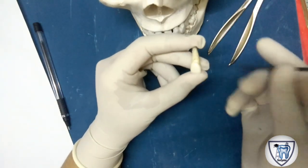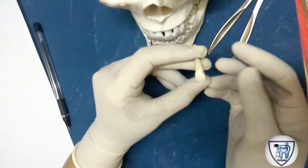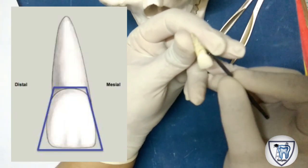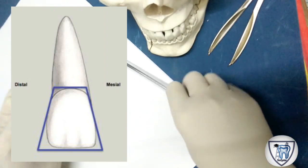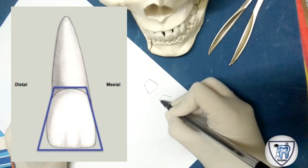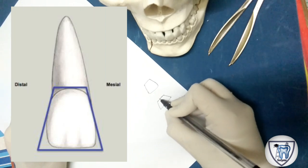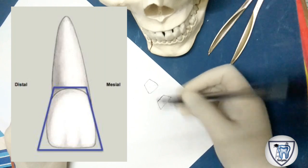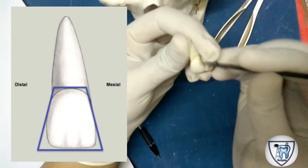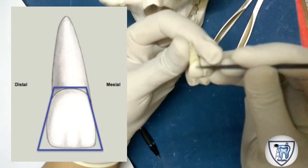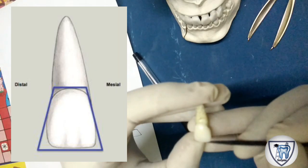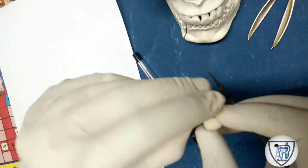Now talking about the anatomy from the labial aspect — the geometry of the crown is trapezoidal. The crown of the maxillary central incisor is trapezoidal in geometry, with the shorter side towards the cervical portion and the longer side towards the incisal surface or incisal ridge.